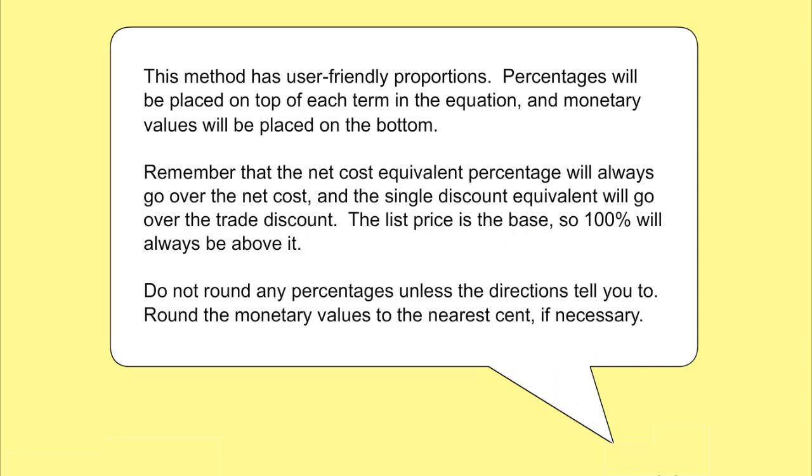Remember that the net cost equivalent percentage will always go over the net cost and the single discount equivalent will go over the trade discount. The list price is the base so 100 percent will always be above it. Do not round any percentages unless the directions tell you to. Round the monetary values to the nearest cent if necessary.